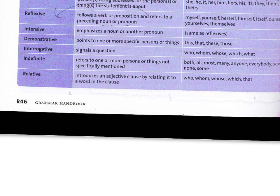Another example from the grammar book: 'The merchants who are eager for sales shout to customers, come here!' That 'who' is a relative pronoun introducing the adjective clause 'who are eager for sales,' which describes the merchants.